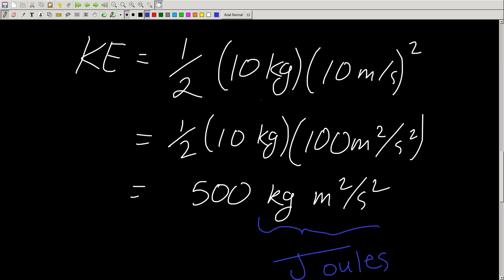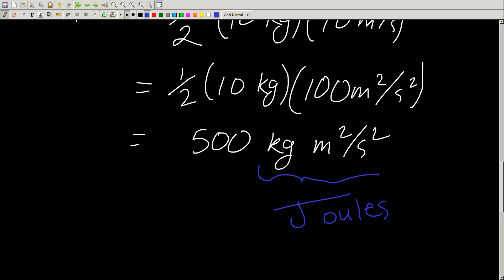And so energy actually is described by units of joules. So really, this 10 kilogram ball rolling down a hill that gains a speed of 10 meters per second at the bottom of the hill will have gained 500 joules of energy due to the fact that it's moving. So it's pretty wild stuff.